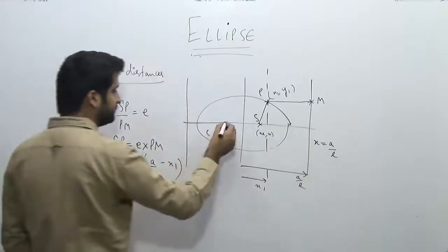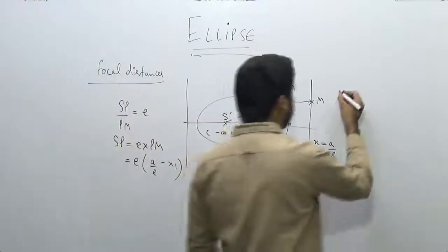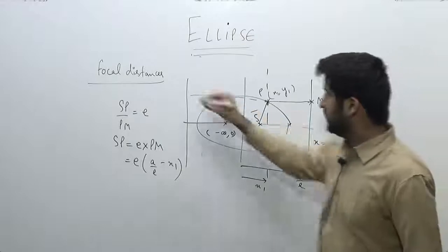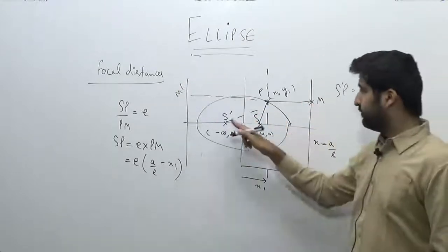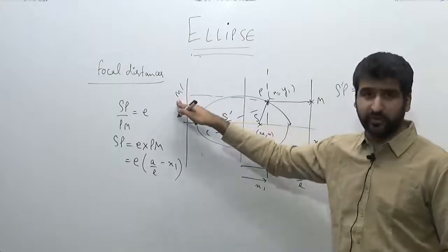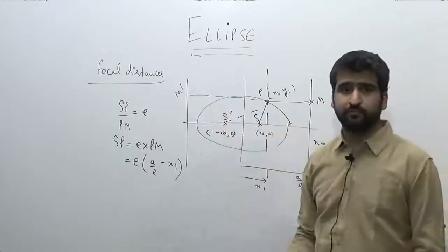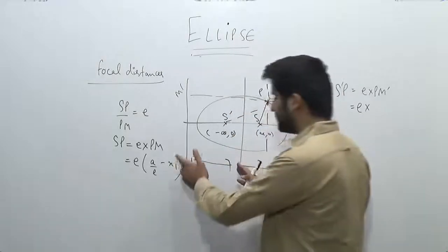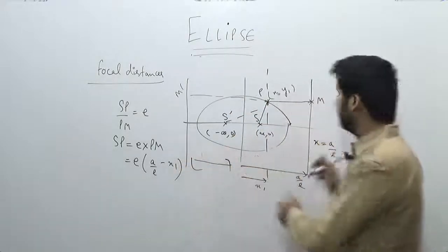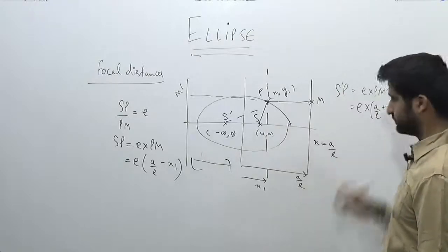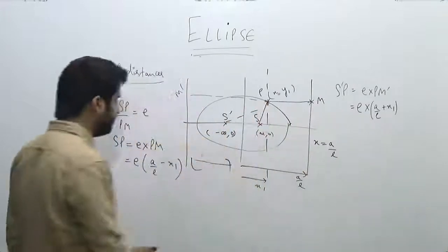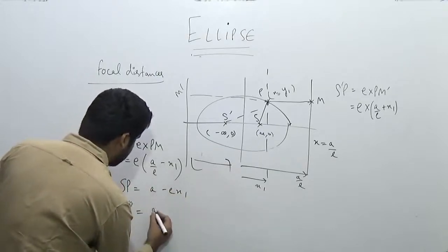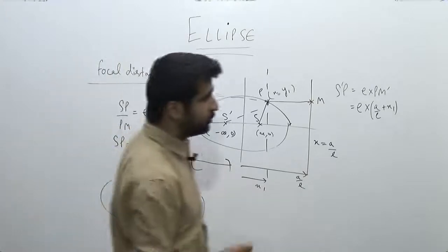Let's move on to the next distance, which will be S'P. S'P can be written as e times PM', as I explained earlier — if you are seeing the distance from this focus, you have to see the distance from the corresponding directrix, which is the left one. So this distance comes out to be the addition of the two distances: a/e and x₁, giving a/e plus x₁. On simplifying, SP comes out to be a minus ex₁, and S'P comes out to be a plus ex₁. So these are the two focal distances of a moving point.